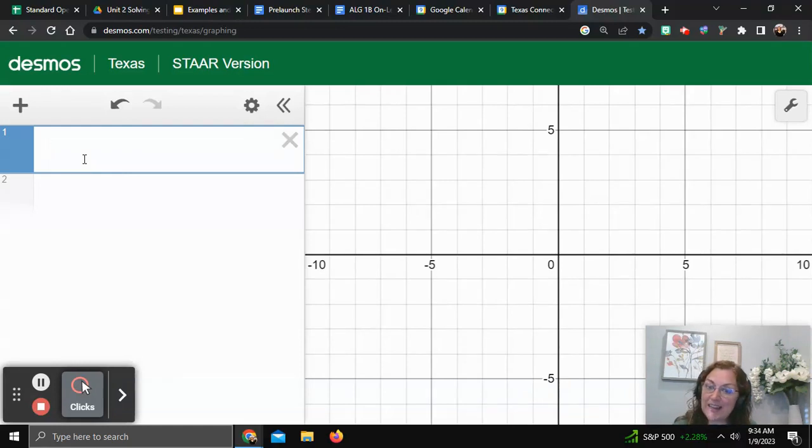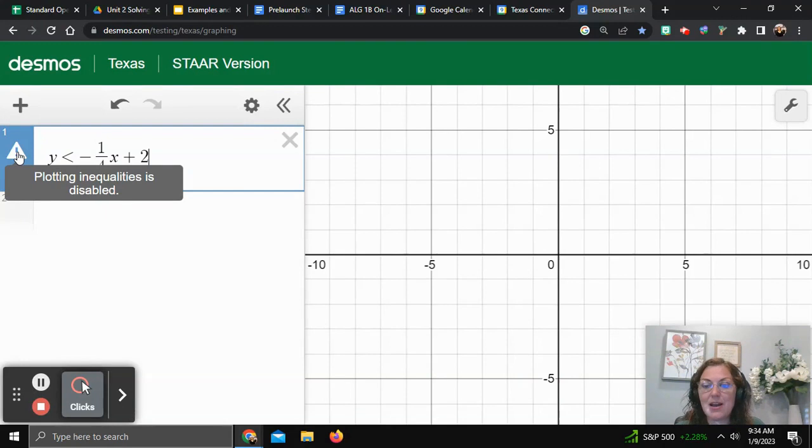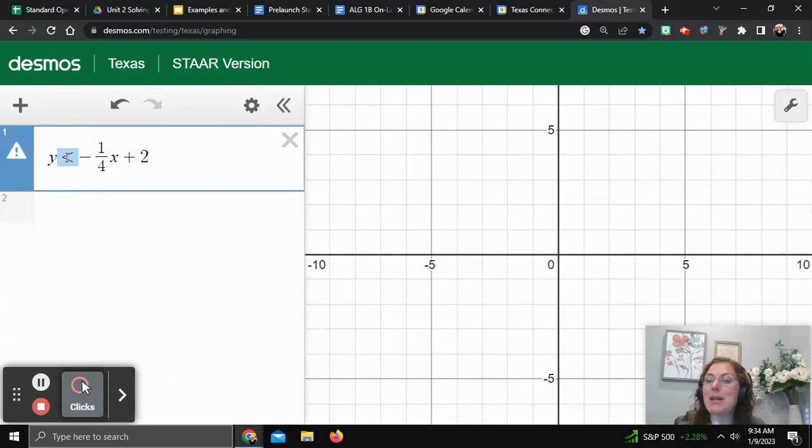So I've got y is less than negative one-fourth x plus 2. Now I see that Desmos is giving me an error here, and that just means that Desmos doesn't graph inequalities. So I'm going to deal with the inequality here in a minute, but I'm going to change this to an equal sign just so Desmos will graph it.